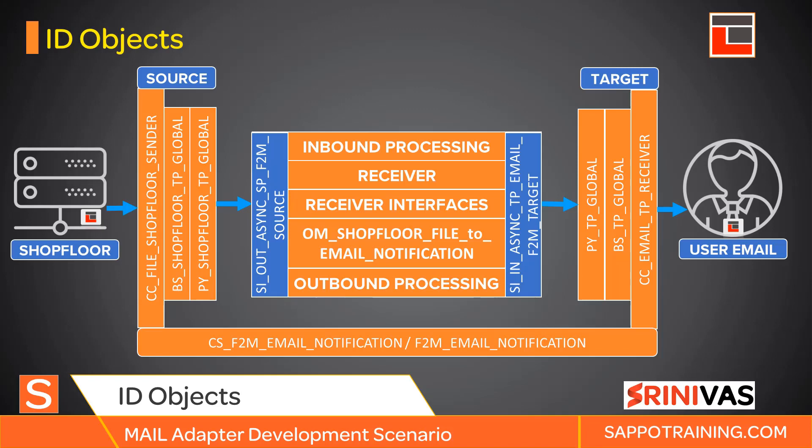Hello and welcome to ID objects configuration. Let's look at the objects that we will be creating as part of our ID configuration. At the source side we have shop floor, and the target we have user email inbox, wherein the file will be converted into an email and the email is sent over to the user email. On the configuration scenario we will use F2M notation, similar to what we used for ESR and email notification, as the name of the business scenario.